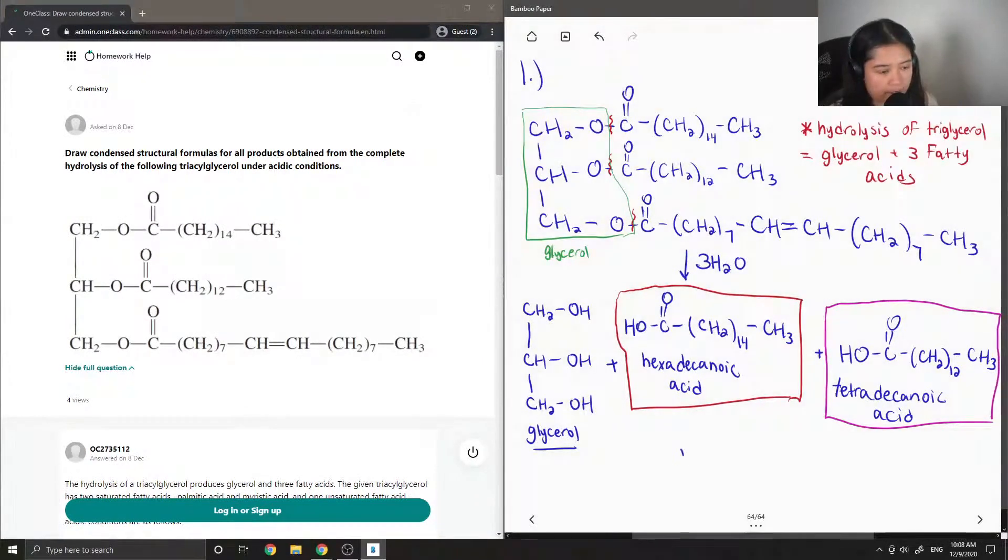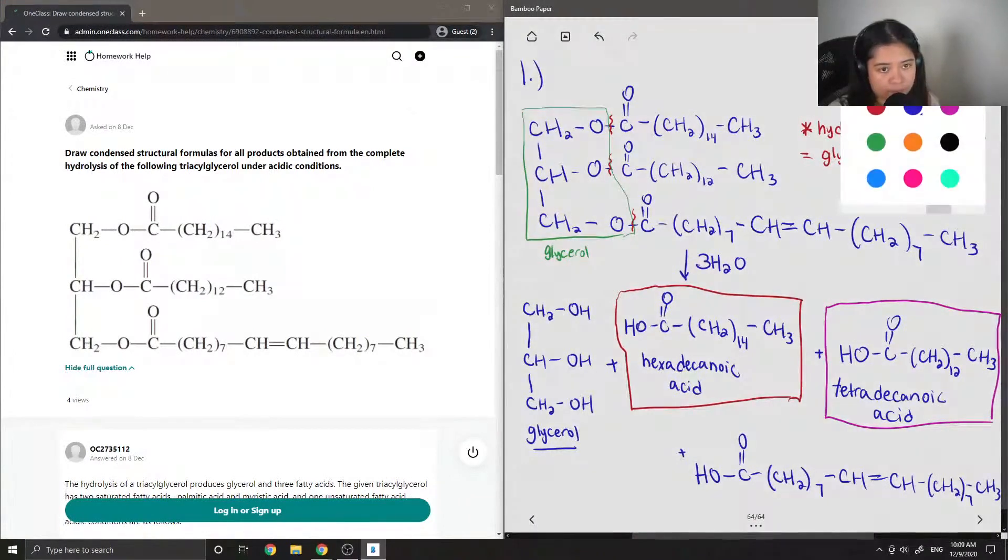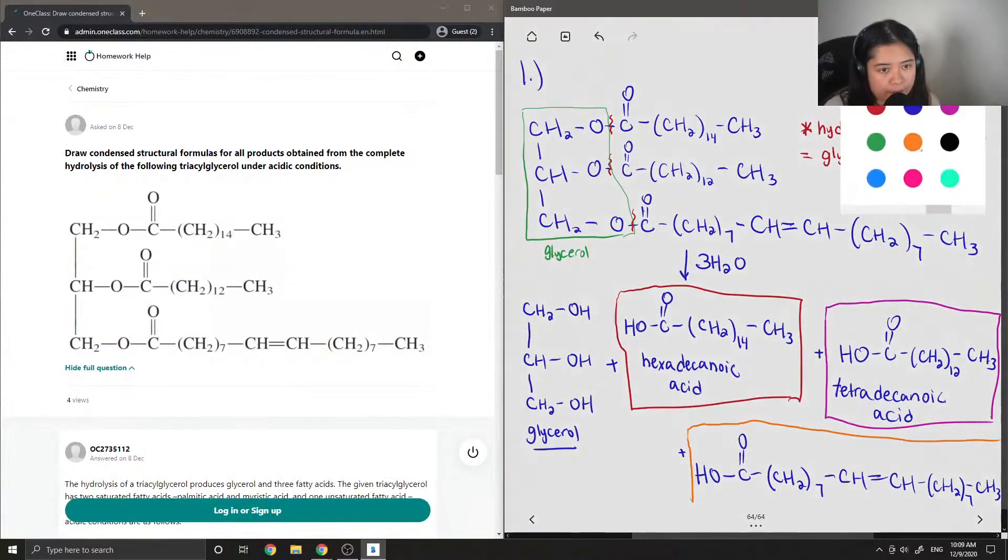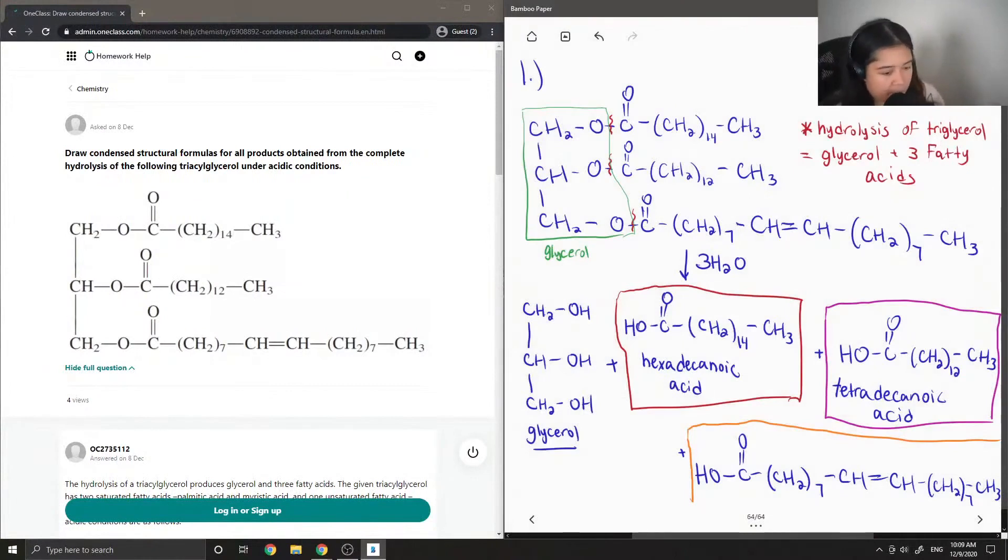And then for our last product, let's draw out the carboxylic acid group first. And we kind of get this long chain that has a double bond in the middle.